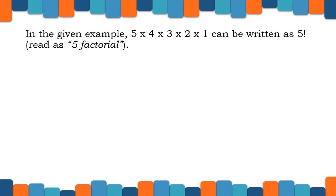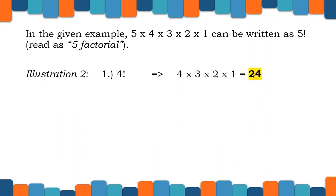In the given example, 5 times 4 times 3 times 2 times 1 can be written as 5 exclamation point. In mathematics, we read this as 5 factorial. For illustration 2: number 1, we have 4 factorial, then 4 times 3 times 2 times 1, which is 24. And number 2, we have 2 factorial, then 2 times 1, which is 2.